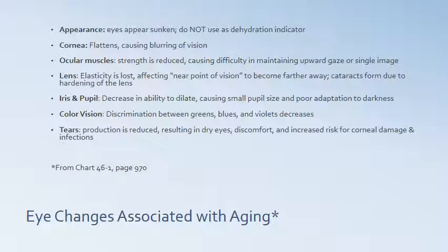Eye changes associated with aging are summarized here — there's a chart in your Iggy book on page 970. In the elderly client, the eyes appear sunken, so do not use eye appearance as a dehydration indicator; it's not going to be accurate. The cornea will flatten, causing a blurring of vision. The ocular muscles lose strength, causing difficulty maintaining upward gaze or a single image. Lens elasticity is lost, affecting the near point of vision and causing it to become farther away. Cataracts form due to hardening of the lens. The iris and pupil decrease in their ability to dilate, causing small pupil size and poor adaptation to darkness — one reason it's harder for elderly people to drive after dark.